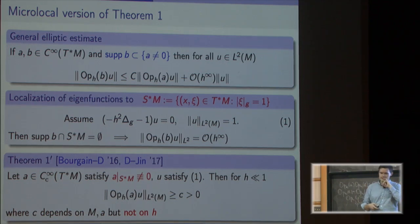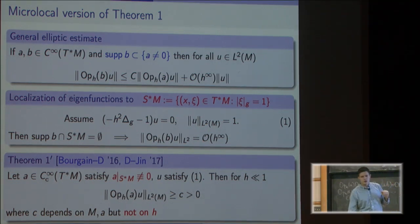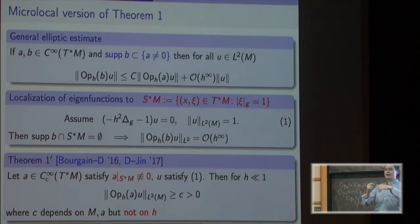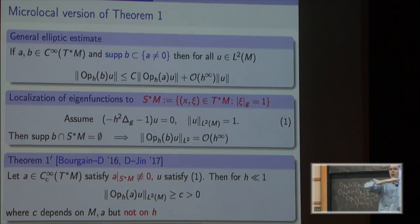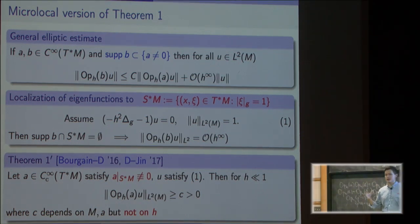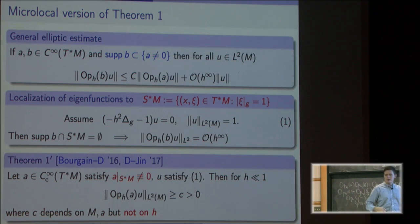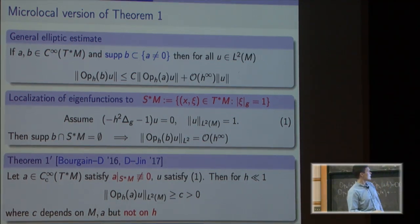If a depends only on x and is not identically zero, this condition is automatically satisfied, and we recover the original Theorem 1. This is a more advanced version. By the way, Theorem 1 is true for the flat torus, but this microlocal statement is provably false there. For the flat torus, eigenfunctions like e^(ix₁/h) live everywhere in position but only on the vector (1,0) in frequency. The torus is a completely integrable system, and eigenfunctions generically live on tori, which are a much smaller set. So this statement would be false for the torus and for the sphere.